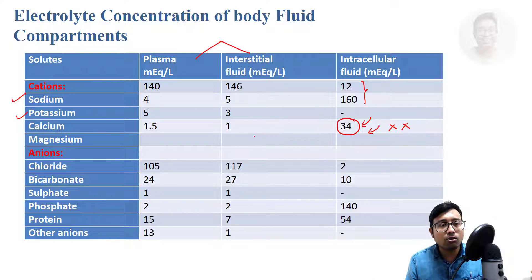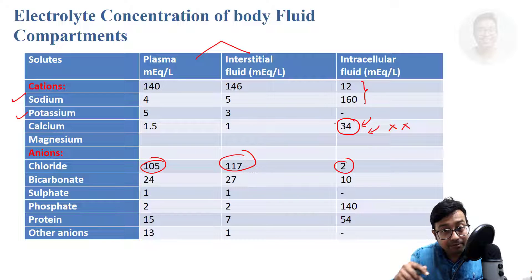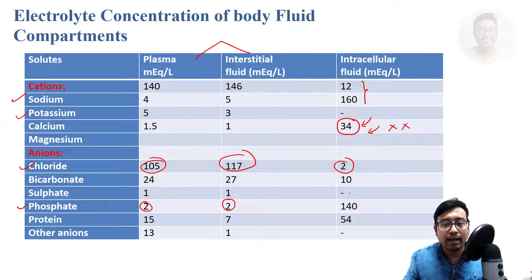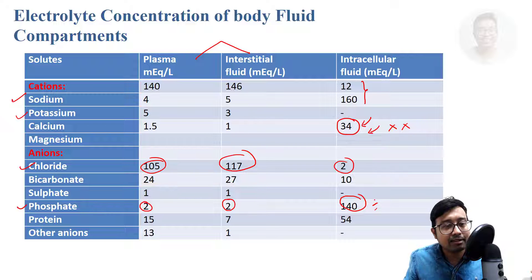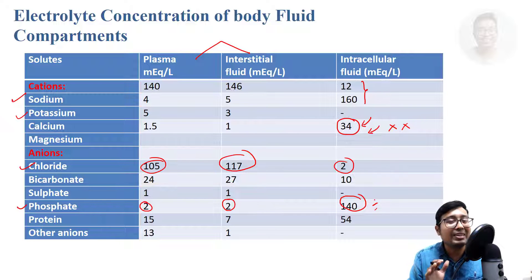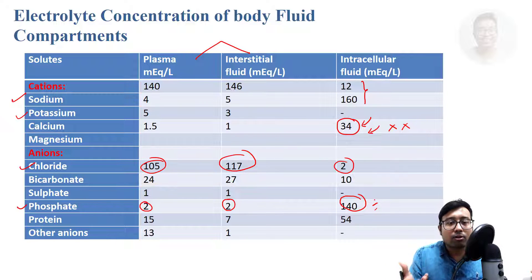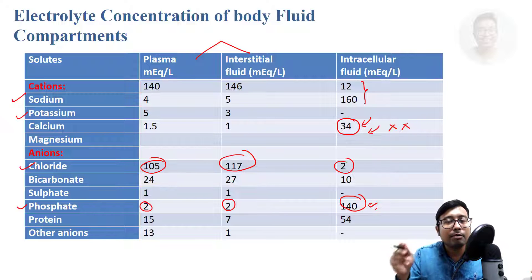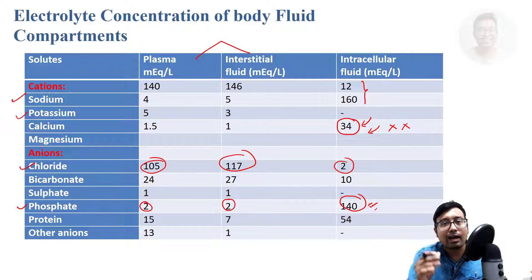Regarding anions: chloride ion is much more present in extracellular fluid and much less in intracellular fluid, and the reverse happens for phosphate — phosphate is very low outside and extremely high inside. So remember: sodium and potassium (cations) and chloride and phosphate (anions), and the difference between intra- and extracellular fluid. Phosphate and potassium go hand in hand — both are more inside the cell and less outside.